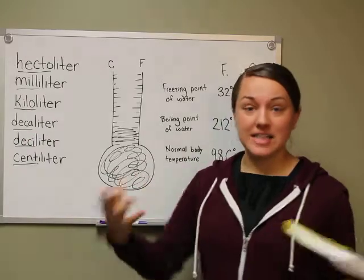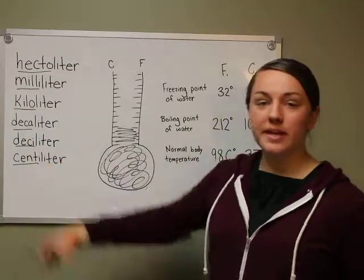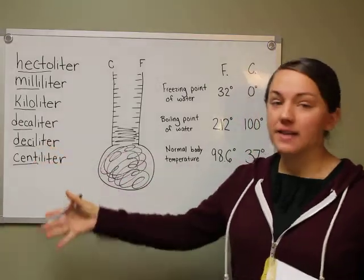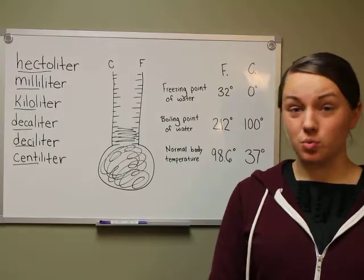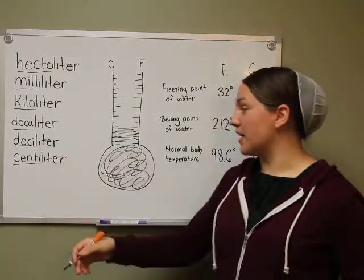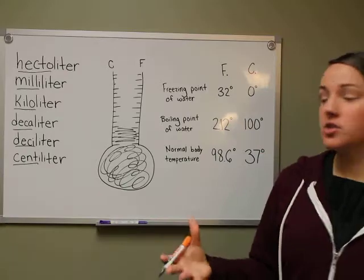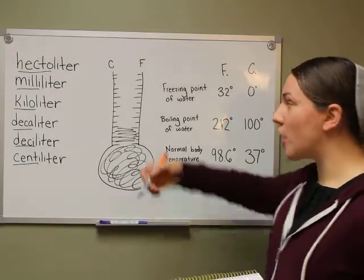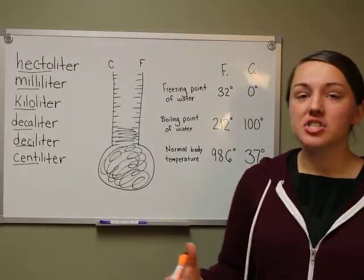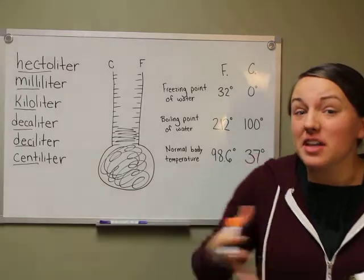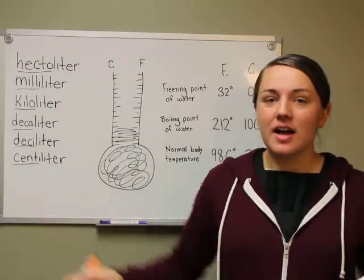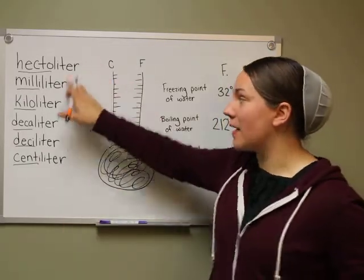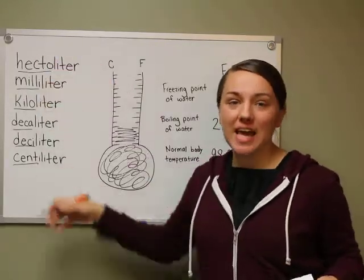Deca means 10, so a decaliter is 10 liters. Deci means one-tenth, so a deciliter is one-tenth of a liter — if you take a liter, divide it into 10 parts and choose one, that is a deciliter. Centi means one-hundredth, so a centiliter is one-hundredth of a liter. Our metric prefixes mean the same thing; just instead of measuring length, we're measuring capacity. So we're talking about liters, but we're using the same prefixes.